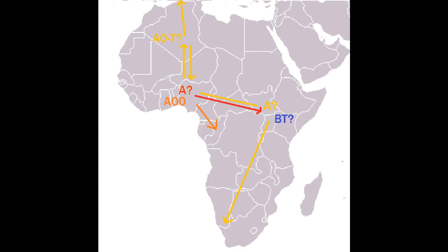A is the major lineage of the Khoisan in the southwest of Africa, and it's also a major lineage of Nilotics. So Eastern and Southern Africans are the main carriers of A. The A00 clade is prevalent at a lower level in West Africans and certain pygmies. The A00T branch has its deepest rooted clades found at a few percent up in the northwest of Africa, which is why it's proposed to have originated there.